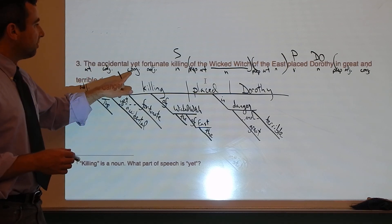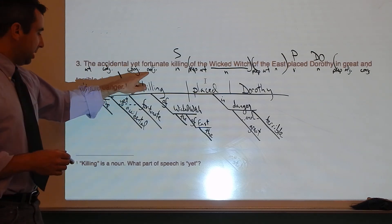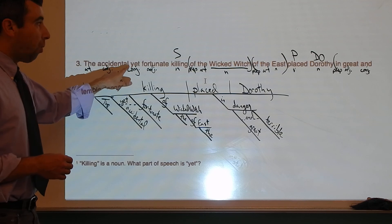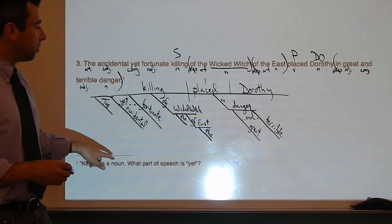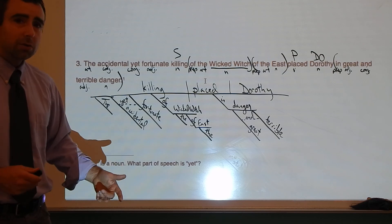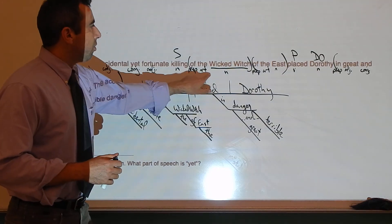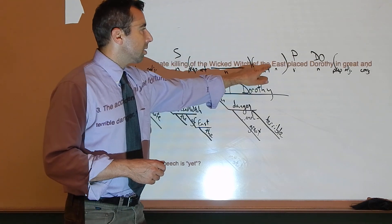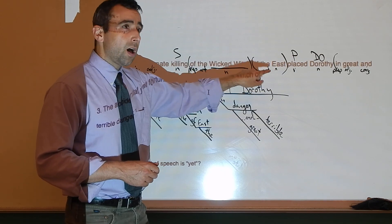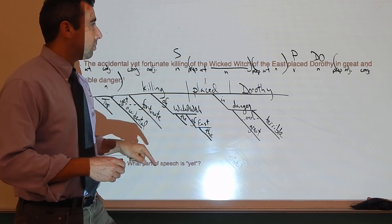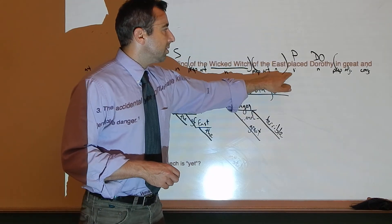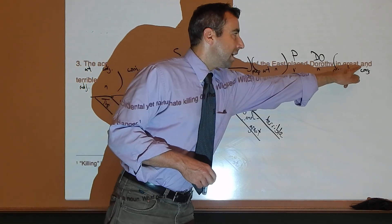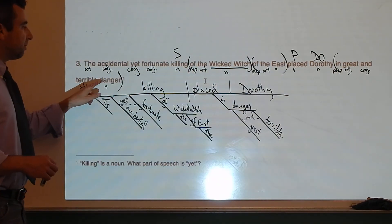Parts of speech: The is an article. Accidental is an adjective. Yet is a conjunction — that's the Y in FANBOYS, by the way. Fortunate is an adjective. Killing is a noun. Of is a preposition. The is an article. Wicked Witch is a noun. Of is a preposition. The is an article. East is a noun — you can tell because it's preceded by the article 'the,' and articles point at nouns. Placed is a verb. Dorothy is a noun. In is a preposition. Great is an adjective. And is a conjunction. Terrible is an adjective. Danger is a noun.